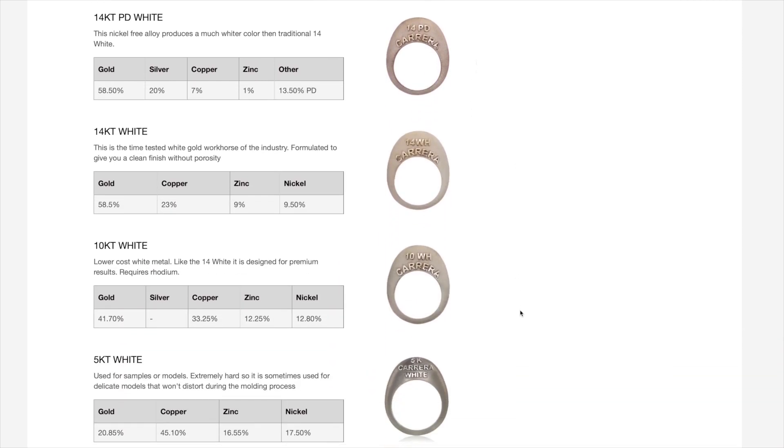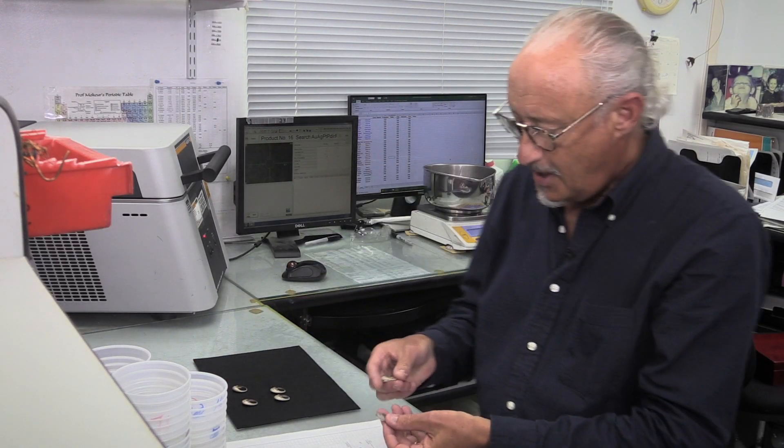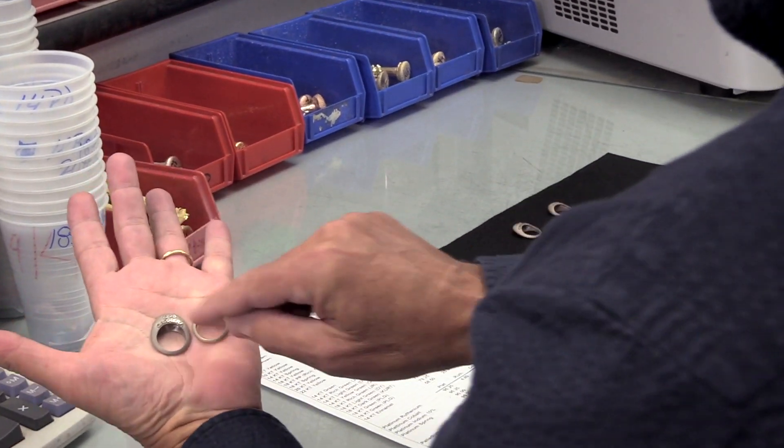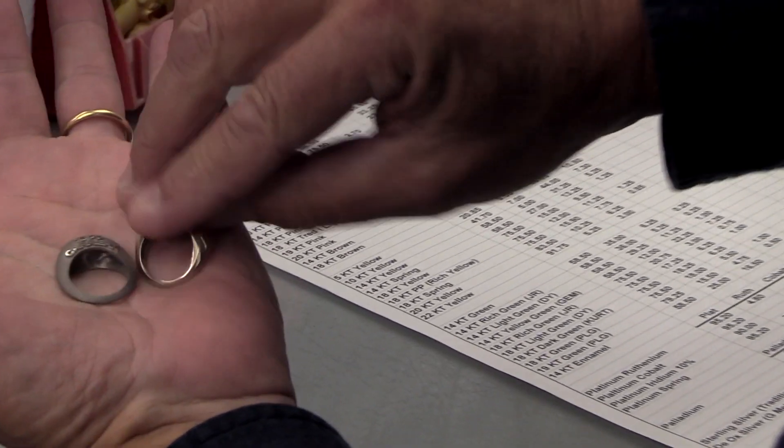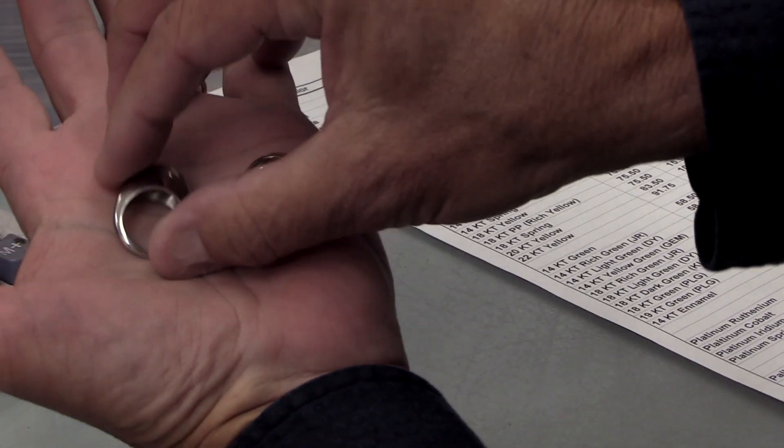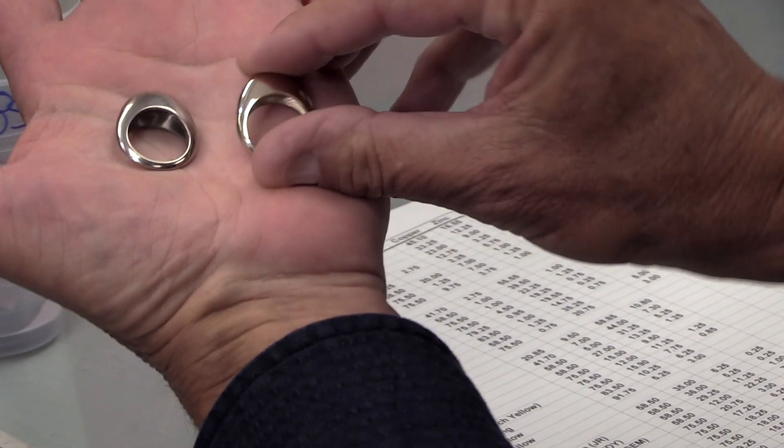I'm going to take our 18-karat palladium and our 18-karat white. Now you can see right here - over here, it's because of the finish, it looks dark. But when you want white, this is really white. You can see there's almost a little bit of yellow in the 18-karat white.